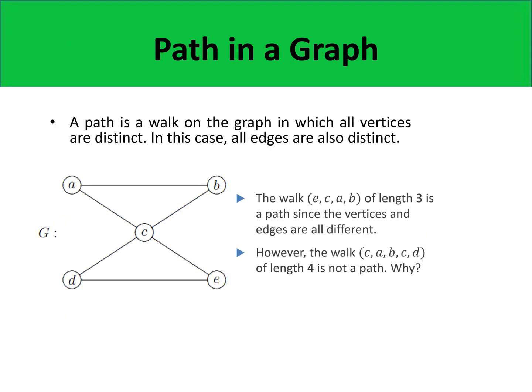A path in a graph is defined as a walk on the graph in which all vertices are different, and in this case all edges would also be different. For example, the walk E→C→A→B is an example of a path of length 3, since the vertices and edges are all different. However, the walk C→A→D→C→D is not a path because the vertex C is repeated in the sequence.